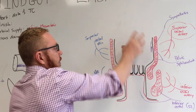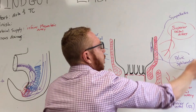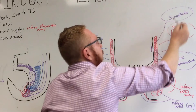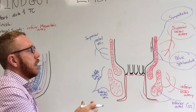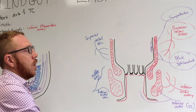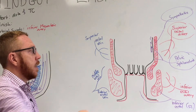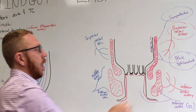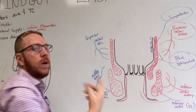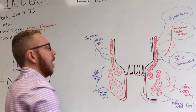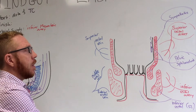Above the pectinate line — the hindgut derivatives — there are two main nerve supplies: the pelvic splanchnic nerves (parasympathetic) and the sympathetic nerves. Sympathetic innervation contracts the internal sphincter, stopping passage of faeces. Parasympathetic supply innervates the mucosa and the internal sphincter, releasing it to allow defecation. From a sensory standpoint, there is no sensation above the pectinate line — so cancer above it will be painless in presentation, whereas tumors below it (ectodermal) will be painful.